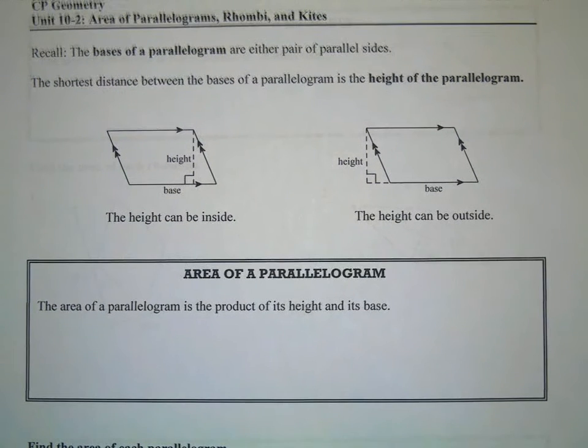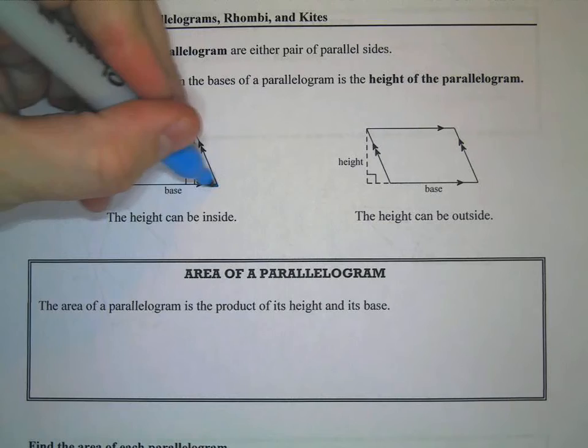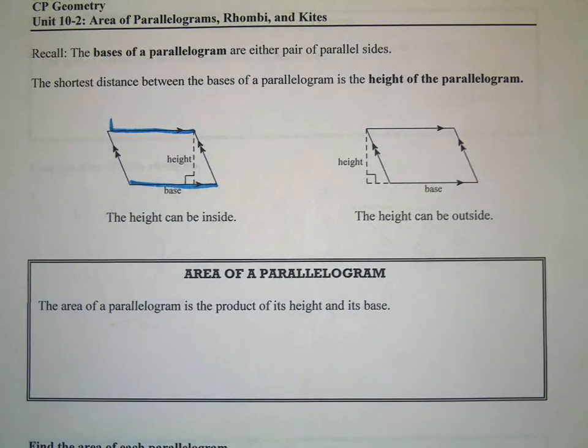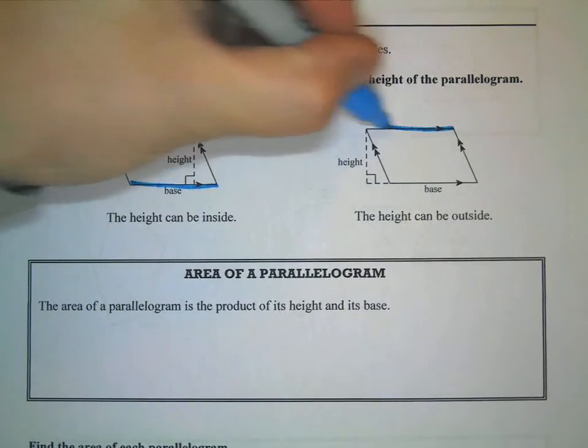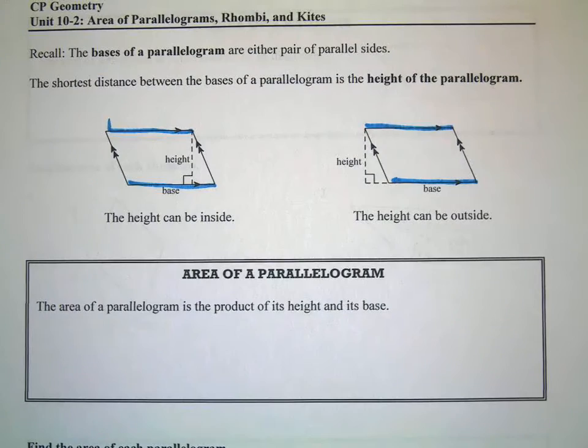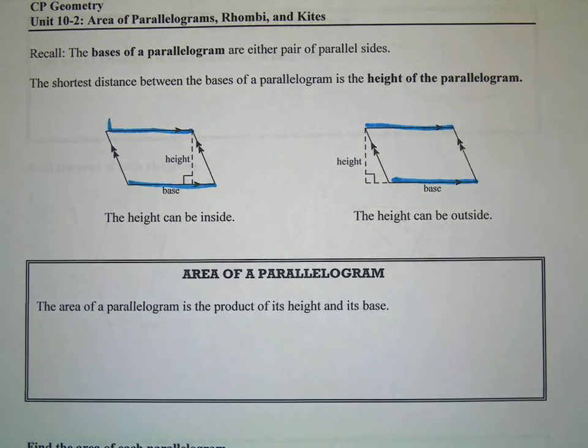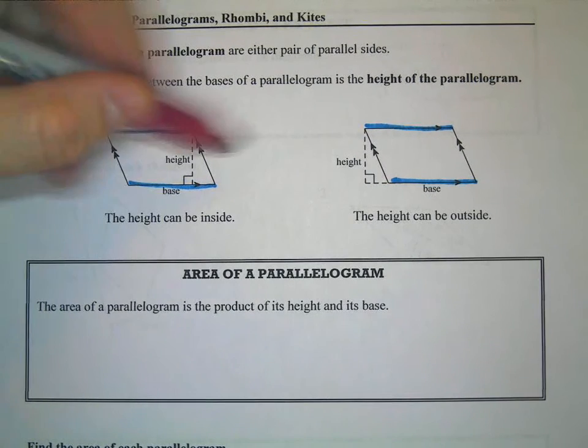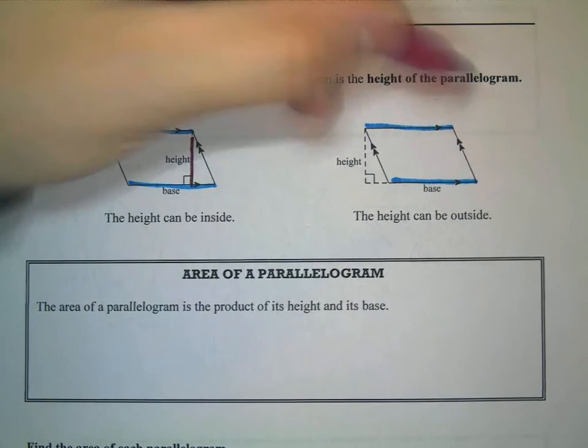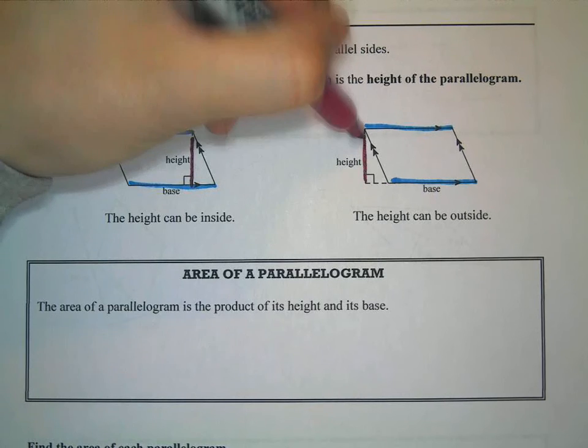Okay, so the bases here are the sides that are parallel, either of them, and then the height is the distance between them. So again, just like in the square and rectangle and the triangle, the height and the base are always the ones that are perpendicular to each other.